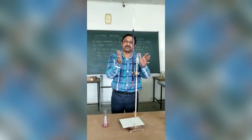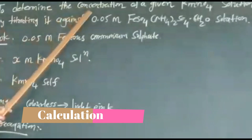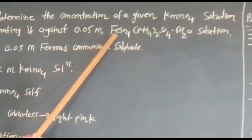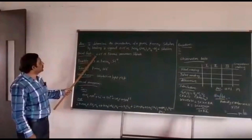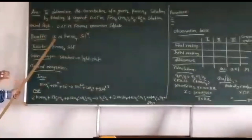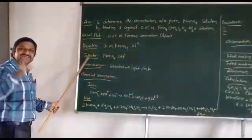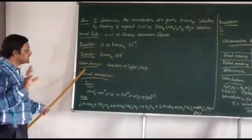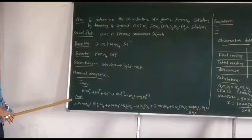Now we will discuss about calculation. The aim is to determine the concentration of a given KMnO4 solution by titrating it against 0.05 molar ferrous ammonium sulphate solution. In the conical flask we take 0.05 molar ferrous ammonium sulphate. We fill up our burette with X molar KMnO4 solution. The indicator: KMnO4 is a self indicator. Colour change is colourless to light pink.